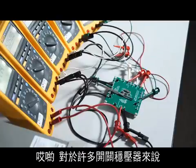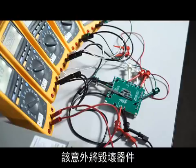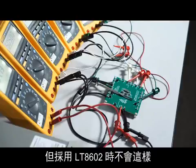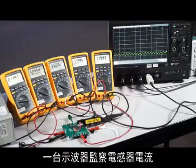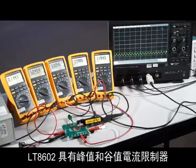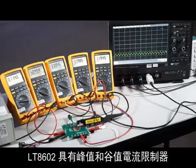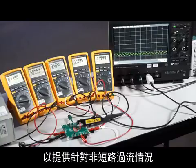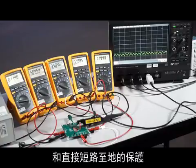Oops! For many switching regulators, that accident would destroy the part. Not so with the LT8602. An oscilloscope monitors inductor current. The LT8602 has both peak and valley current limiters to protect against non-shorting over current conditions, as well as direct shorts to ground.